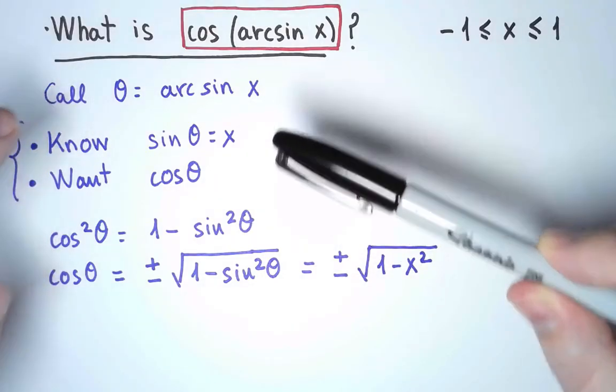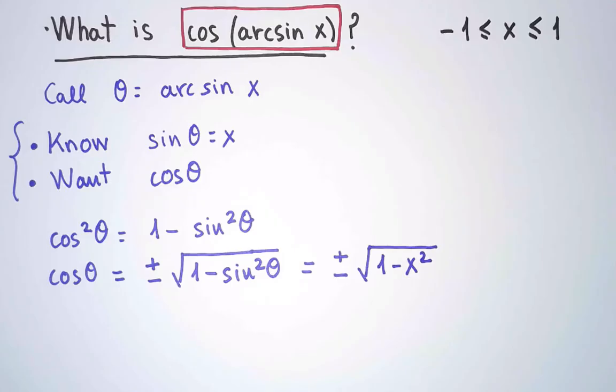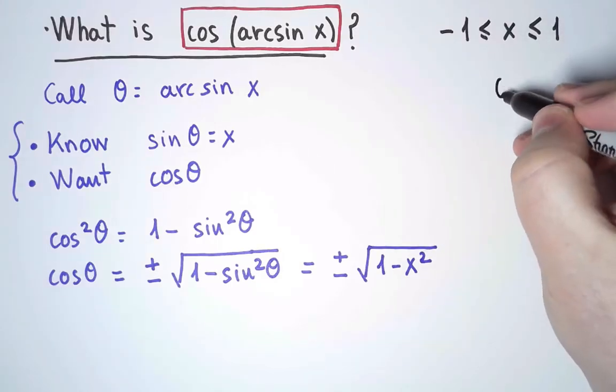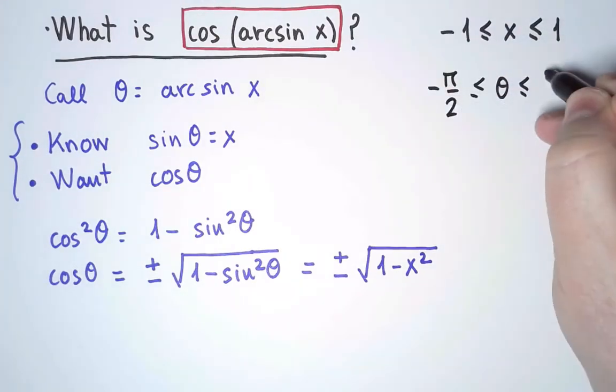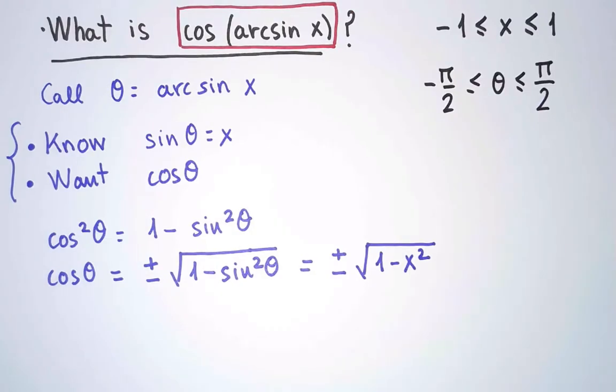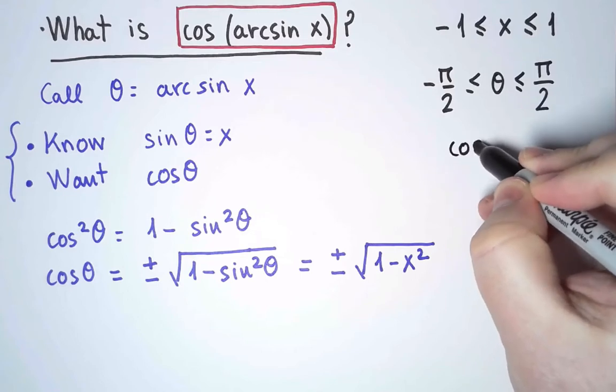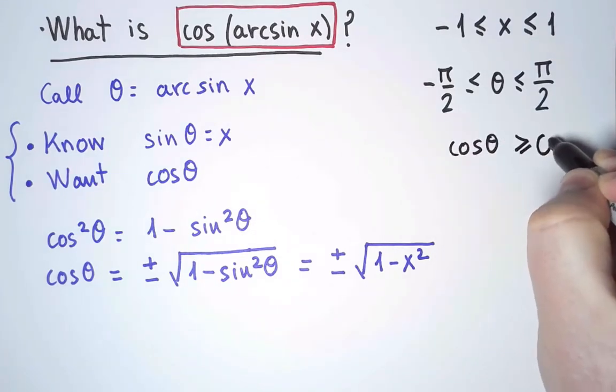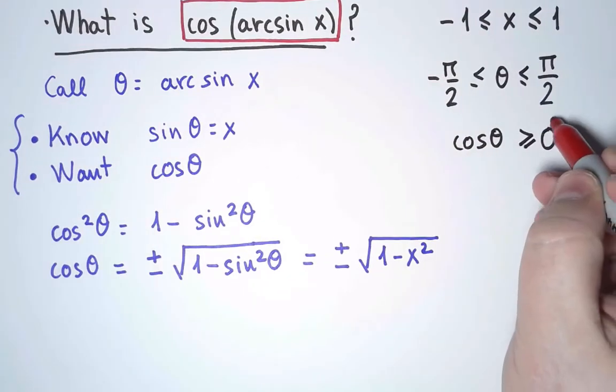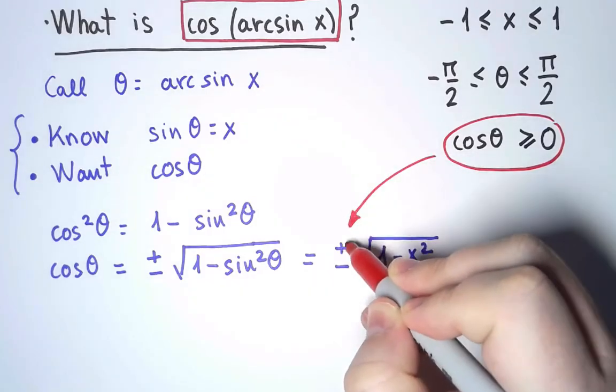The key is in the definition of arcsine. We defined arcsine as the inverse of a specific restriction of sine. θ must be between minus pi over 2 and pi over 2. And in this region, in the first and fourth quadrants, cosine of θ is always positive or zero. That's what I needed to know. I choose the sign plus.